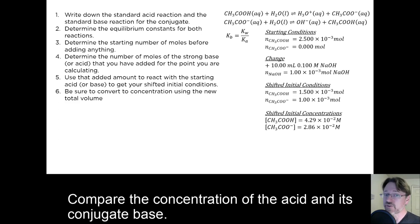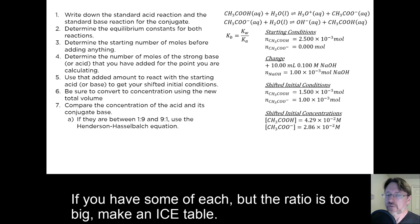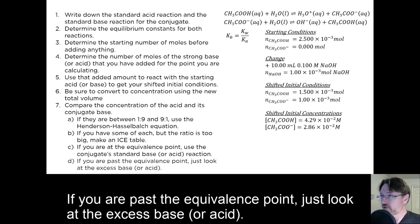Compare the concentration of the acid and its conjugate base. If they're between 1 to 9 and 9 to 1, use the Henderson-Hasselbalch equation. If you have some of each, but the ratio is too big, make an ice table. If you're at the equivalence point, use the conjugate's standard base or acid reaction. And if you're past the equivalence point, just look at the excess base or acid.